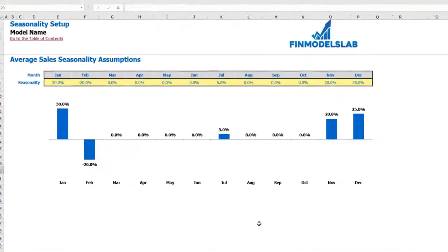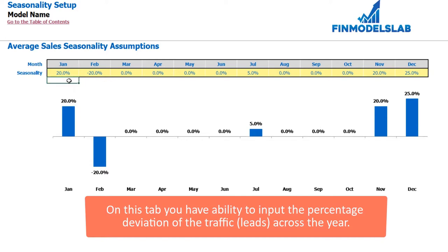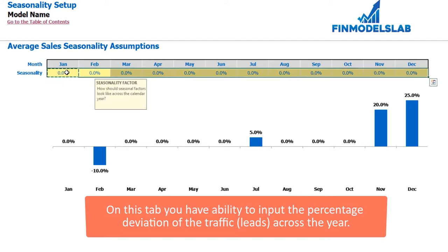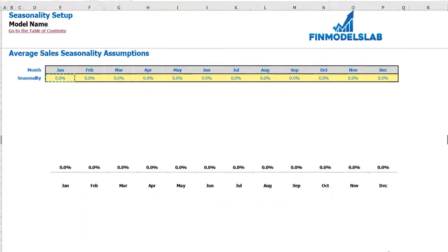Also, you are able to set up the seasonality of your sales. For example, if in January you have 20% seasonality, this means your average annual sale will be impacted by 120%, and if in February it will be minus 10%, you will multiply your average monthly sale for 90%. If you don't need any seasonality, you can just zero out this set of assumptions.